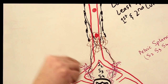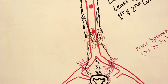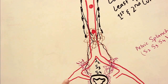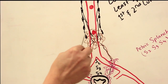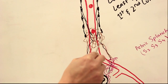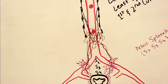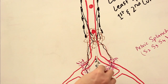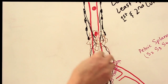This plexus governs the viscera, which are governed by the autonomic nervous system. Because of its close relationship with the inferior mesenteric artery, this is the inferior mesenteric plexus, also known as the superior hypogastric plexus. You can see these black fibers — this plexus is receiving postganglionic sympathetic fibers, which synapse in the ganglion and then emerge as postganglionic sympathetic fibers.